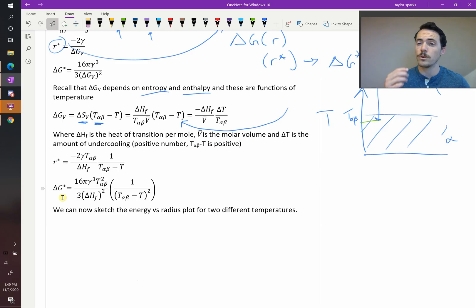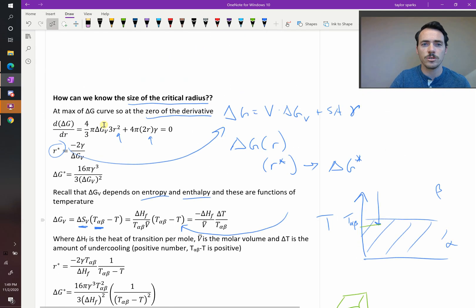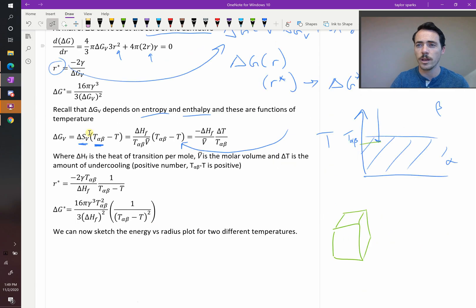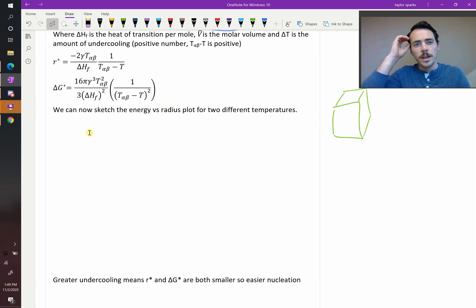Now again, this was for a spherical particle. Imagine how it might be different if you were nucleating a cube, which can happen, or a tetrahedra, or an octahedra, or some other shape. You would have to do a different geometric approach to this because you're not dealing with a volume as four-thirds pi R cubed. It would be a different expression if you're dealing with cubes or triangles or some other shape, but the approach would be the exact same.